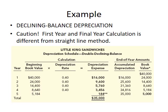Under the double declining balance method, use beginning book value times the depreciation rate each year, and in the last year observe the beginning book value versus the residual value to calculate the final depreciation amount.